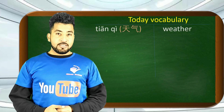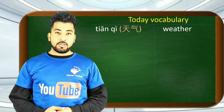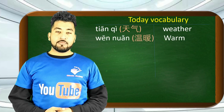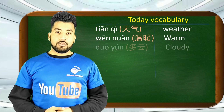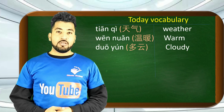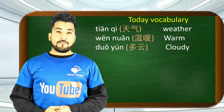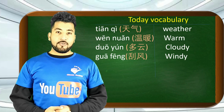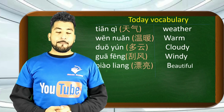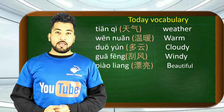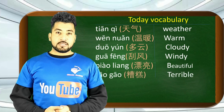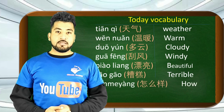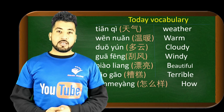Vocabulary: 天气 means weather. 温暖 means warm. 多云 means cloudy. 卦风 means windy. 漂亮 means beautiful. 糟糕 means terrible. 怎么样 means how.